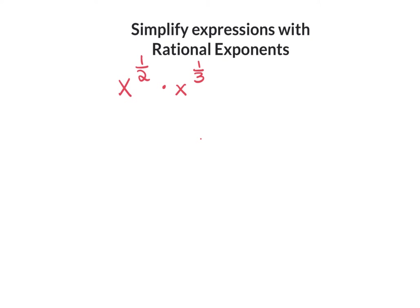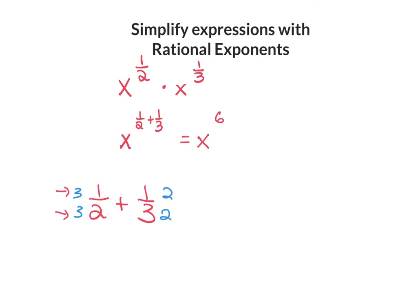Another example: x to the power of 1/2 times x to the power of 1/3. Same type — we add exponents — but we don't have a common denominator. To add 1/2 plus 1/3, I get a common denominator: 3/6 plus 2/6 equals 5/6. So the answer is x to the power of 5/6, which in radical form is the sixth root of x to the fifth.